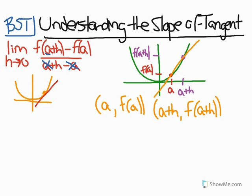And if I wanted to find the slope of those, I would just do the slope formula. So I would do f at a plus h minus f at a over a plus h minus a. So I did y2 minus y1 over x2 minus x1. So this is just finding the slope of a secant line.